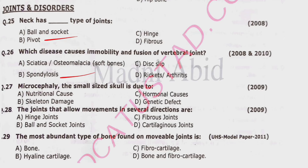Question 27: Microcephaly — small size skull — is due to: nutritional cause, skeletal damage, hormonal causes, or genetic defect. The correct option is delta — genetic defect. Question 28: The joints that allow movements in several directions are ball and socket joints, fibrous joints, or cartilaginous joints.